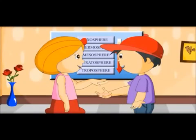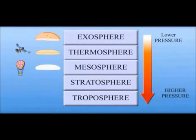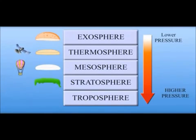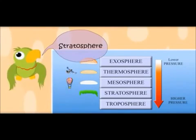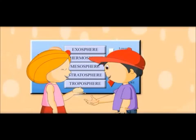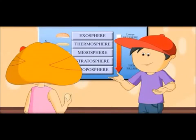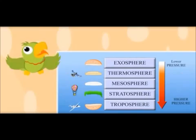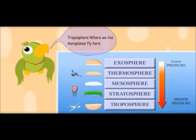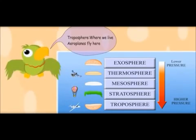This layer is called the stratosphere. Airplanes don't fly here. To see where airplanes fly, we need to come to the other layer. This is the last layer, where airplanes fly. Air here is heaviest. This is the layer where we live and airplanes fly.